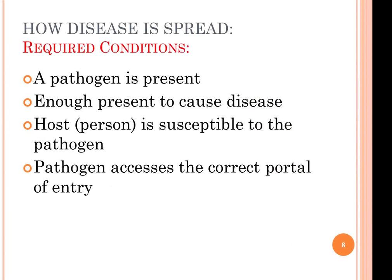Let's talk about how disease is spread. In order to catch a disease, the right circumstances or conditions have to be present. First, a pathogen has to be present — meaning there has to be a germ that carries the disease. There also has to be enough of it, a critical mass, in order to catch it.